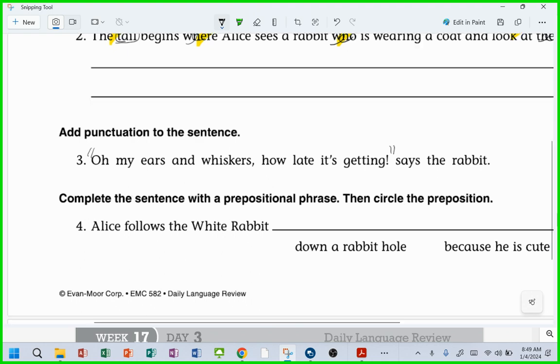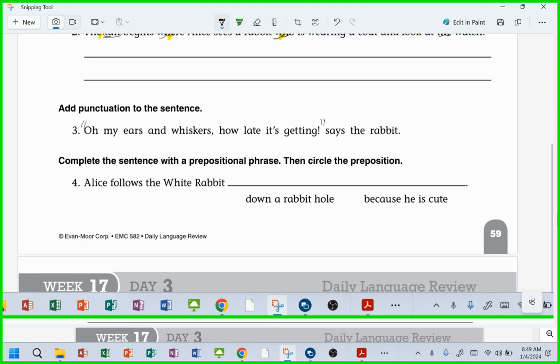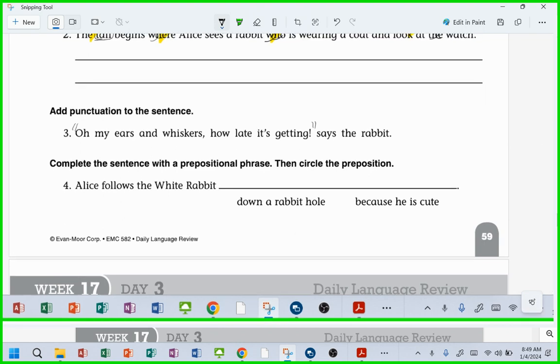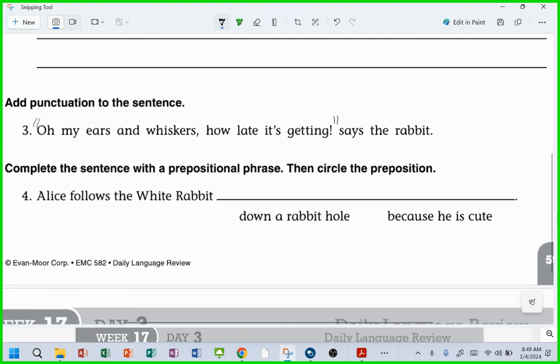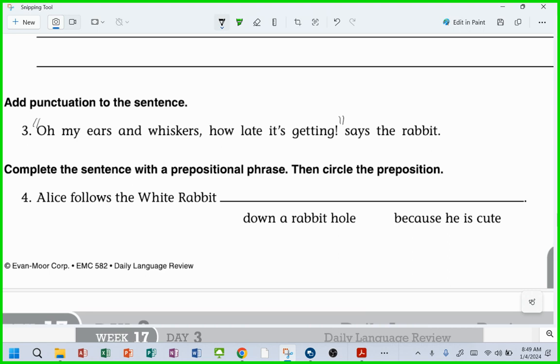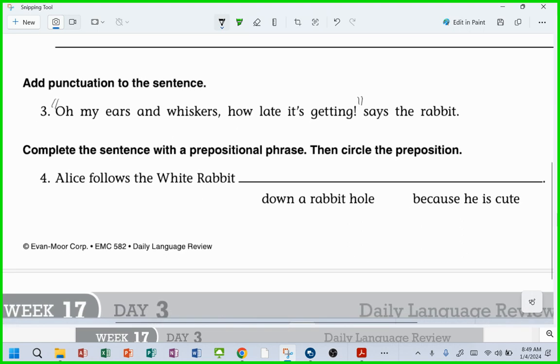Are you ready for this? Complete the sentence with the prepositional phrase, oh good, because we've been talking about those, haven't we? Then circle the preposition. Alice follows the White Rabbit down a rabbit hole or because he is cute. Which one is a prepositional phrase?